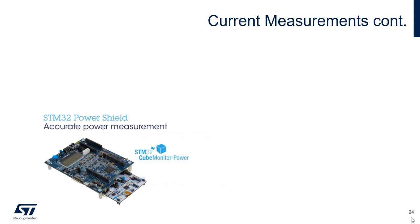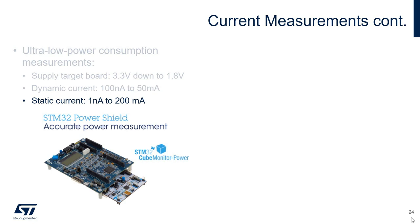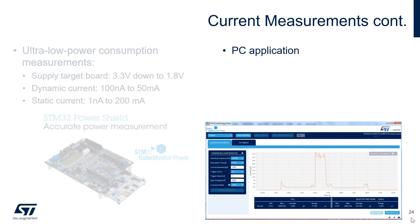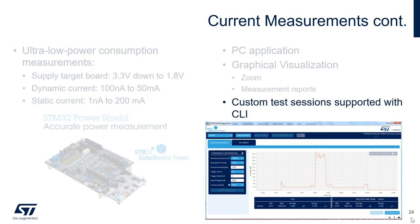Some key features of the STM32 power shield are that it can be used as a standalone device and supports ultra-low power consumption measurements. These measurements include measuring from a supply target board running at 3.3 volts down to 1.8 volts, measuring dynamic current within the range of 100 nanoamps to 50 milliamps, and measuring static current within the range of 1 nanoamp to 200 milliamps. In addition, the STM32 power shield can be used with the STM32 Cube Monitor Power PC application, which provides graphical visualizations allowing you the flexibility of honing into specific areas, further analysis, and measurement reports. The STM32 Cube Monitor also allows for custom test sessions supported with a command line interface. For additional information, please visit ST.com.